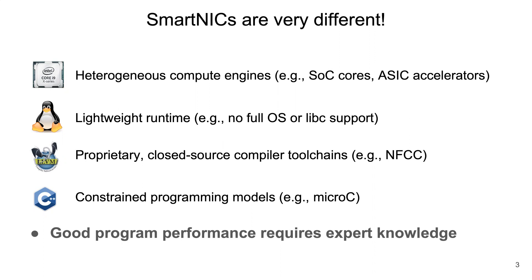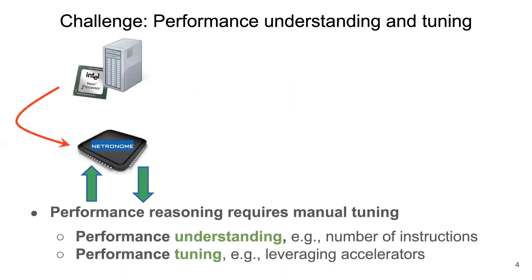On the programming model level, host servers support general-purpose C/C++ along with frameworks such as Click, while SmartNICs usually use similar variants without complete DPDK support. This also indicates that in many cases, host server NFs could not directly run on SmartNICs. In other words, a translation and porting process is often needed. Due to these barriers between host servers and SmartNICs, network developers usually rely on a tedious trial-and-error process in order to understand and improve the performance of NF offloading.